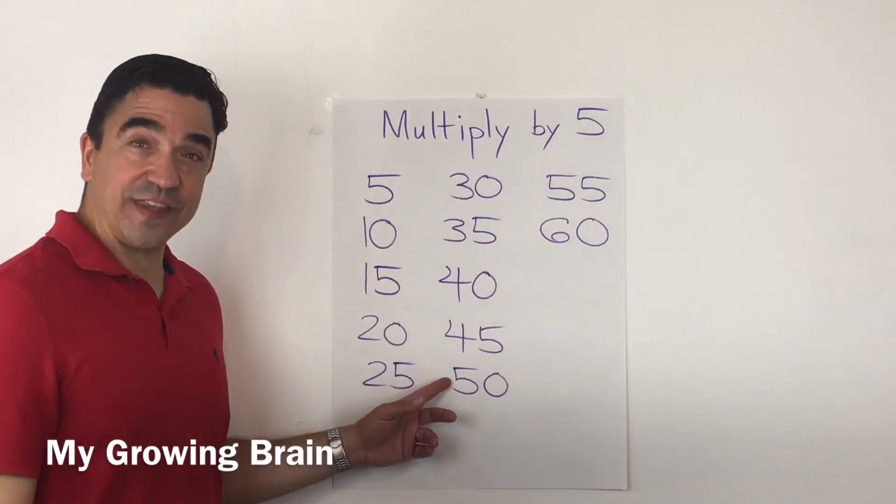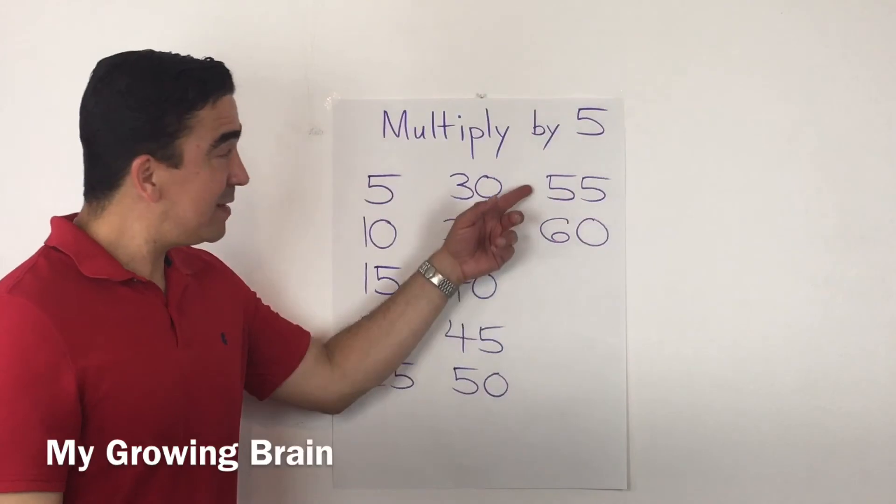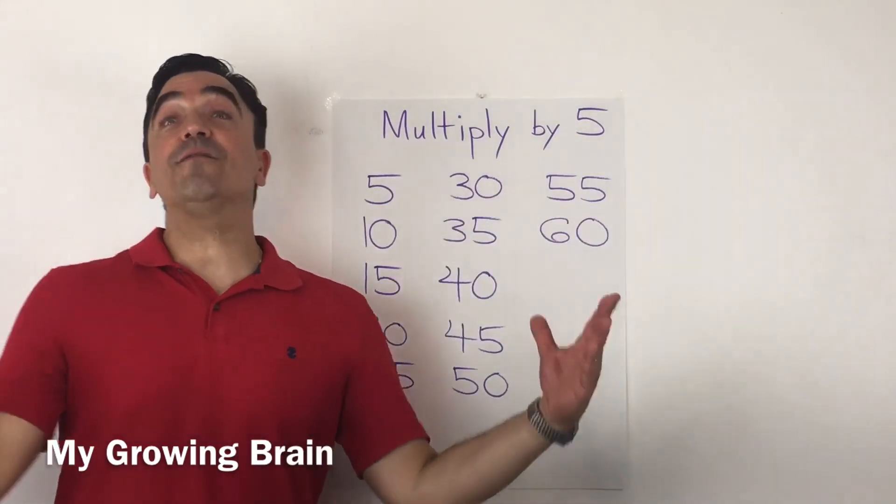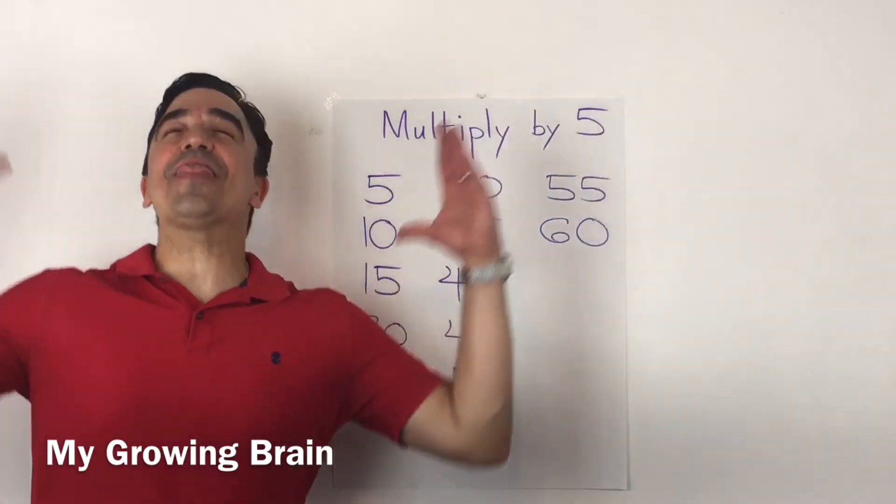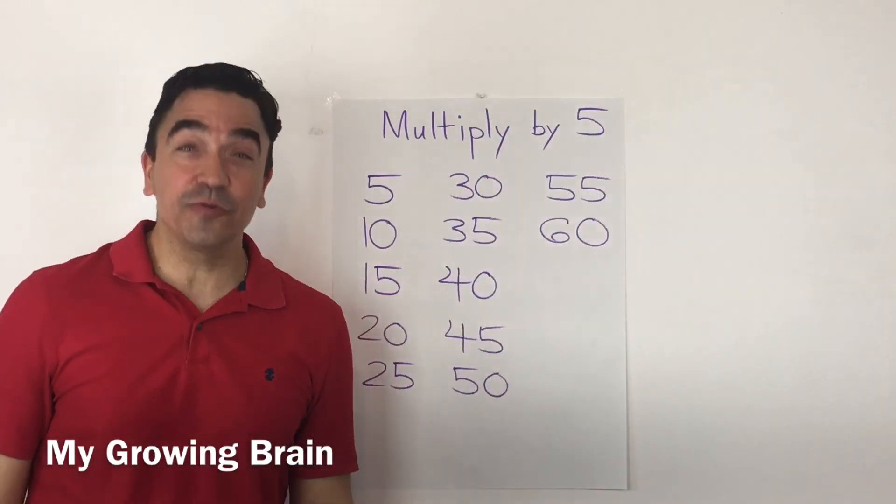5 times 11 is 55, and 5 times 12 is 60. That concludes our lesson.